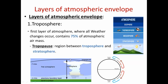Hot air moves upward while cold air moves downward, so the movement of air in the troposphere is vertical. Tropopause is a region that separates the troposphere layer from the stratosphere layer, as we can observe in the figure representing the atmospheric layers. The first layer is troposphere, followed by stratosphere, while the tropopause region lies between them.